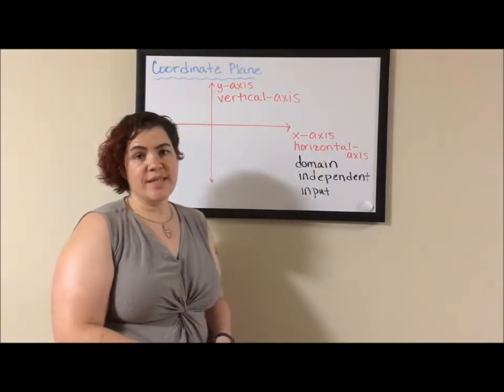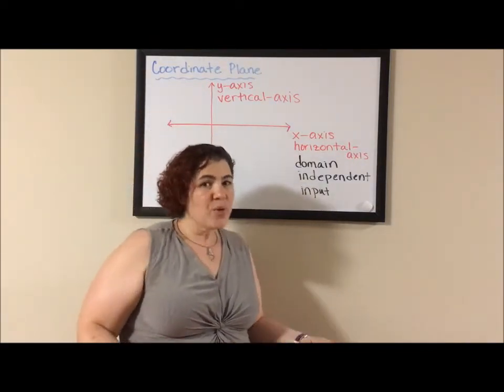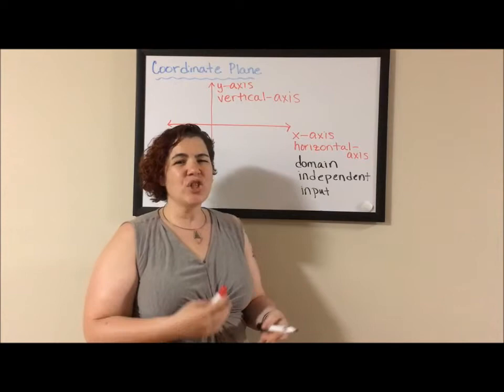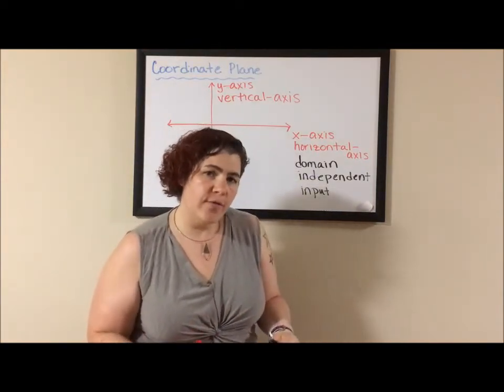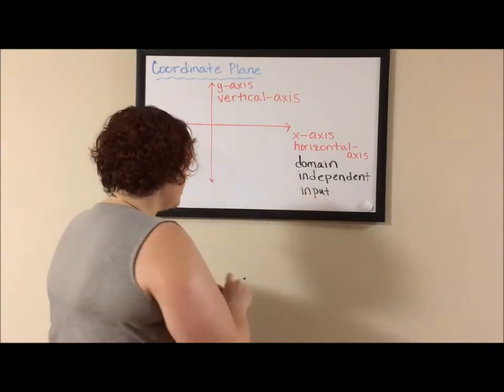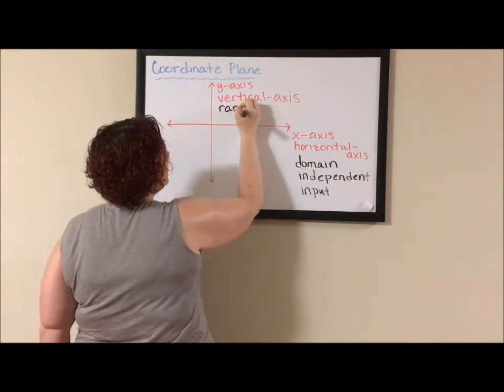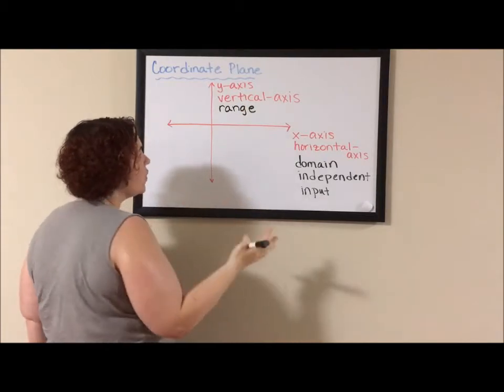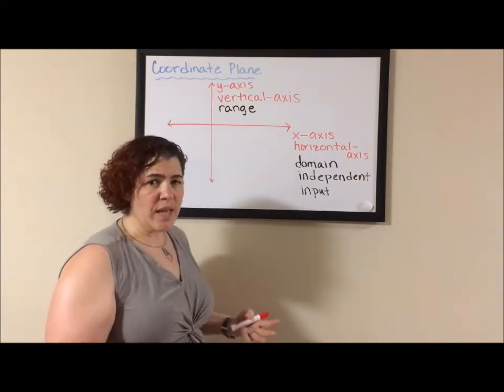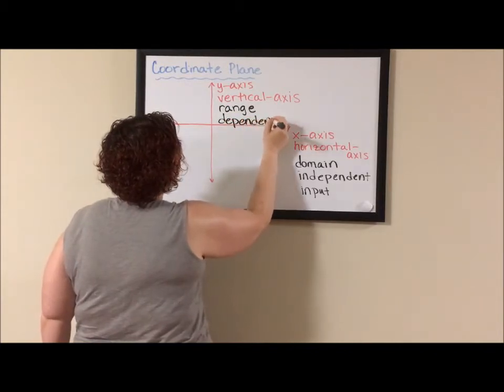x and y start to date. The thing is, while x struts around his domain hanging out with all his friends, he may not always give y the attention she craves. And she ends up being isolated away from her friends and family so that x is really her only connection to the outside world. So whereas x is strutting around his domain, y is stuck at home with a range of emotions. When he's paying attention to her, she's happy. When he is ignoring her, she's sad. She has this range of emotions. x is this independent soul doing whatever he wants, while y is completely dependent on x.